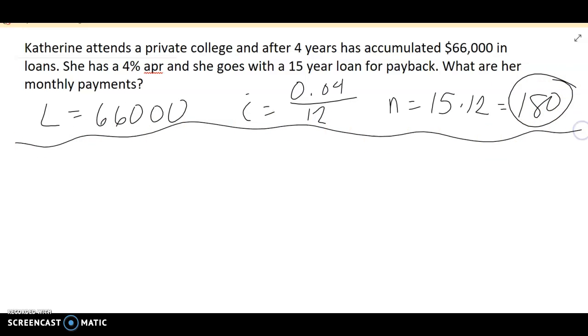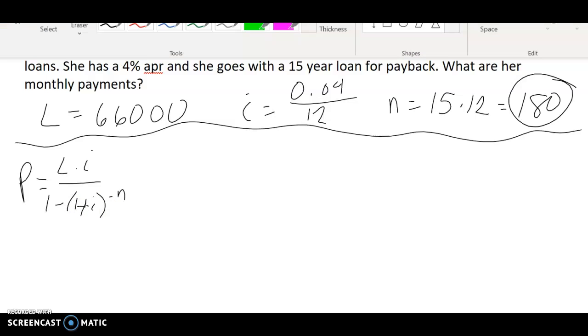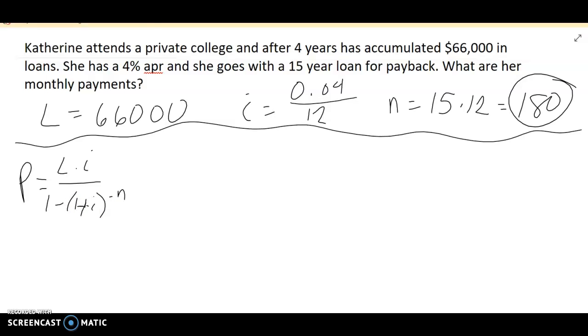Okay, so now let's plug those in to our equation. So again, remember that P equals L times I over 1 minus 1 plus I raised to the negative N. The key, the first key to this is making sure that we have everything plugged into the correct space. Then we'll get into the order of operations.